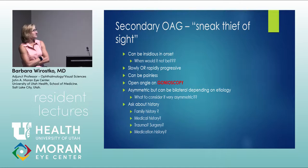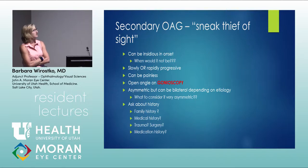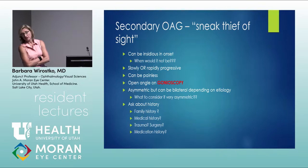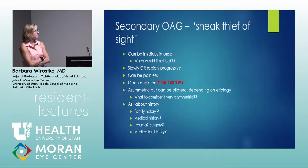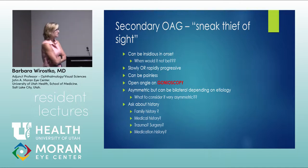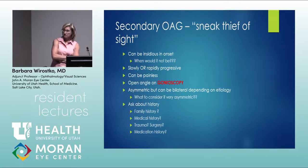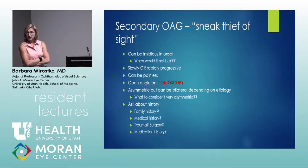Secondary open angle glaucoma can be slowly or rapidly progressive, and painless if IOP rises gradually. By definition it is open angle, so gonioscopy is mandatory. It can be asymmetric or bilateral depending on etiology. If asymmetric, think about conditions like pseudo-exfoliation, trauma, Fuchs, and ICE syndrome.